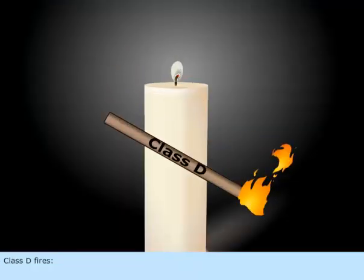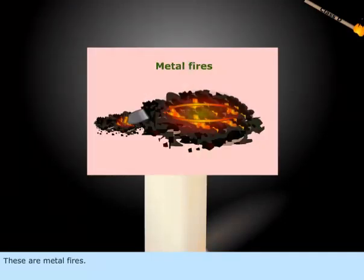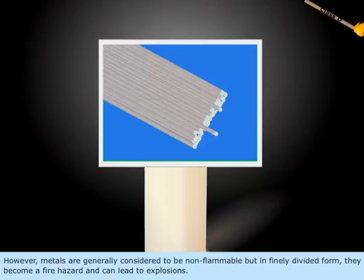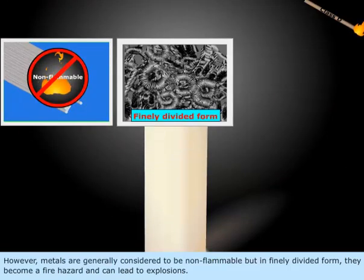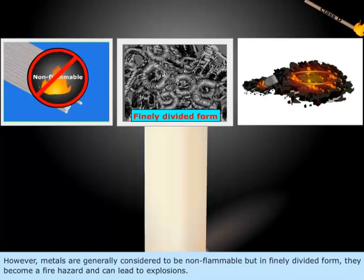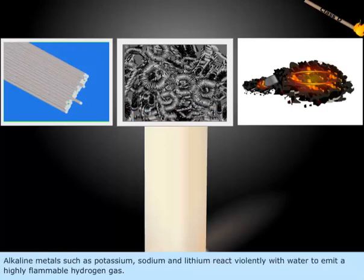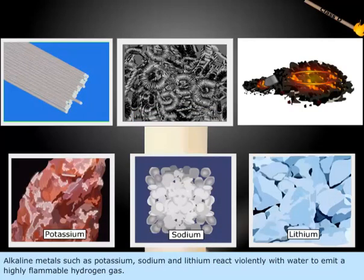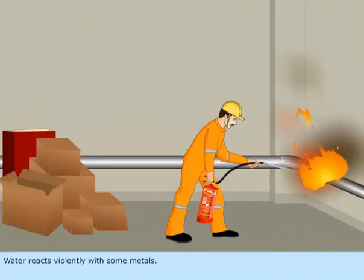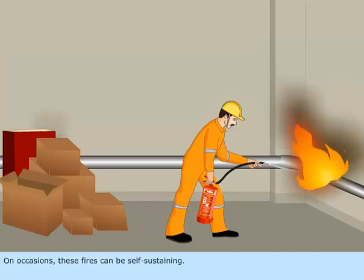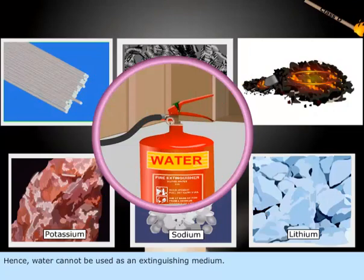Class D fires. These are metal fires. However, metals are generally considered to be non-flammable, but in finely divided form they become a fire hazard and can lead to explosions. Alkaline metals such as potassium, sodium, and lithium react violently with water to emit highly flammable hydrogen gas. Water reacts violently with some metals, and on occasions these fires can be self-sustaining. Hence, water cannot be used as an extinguishing medium.